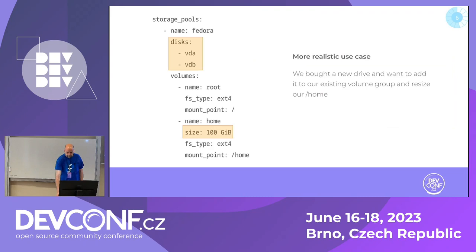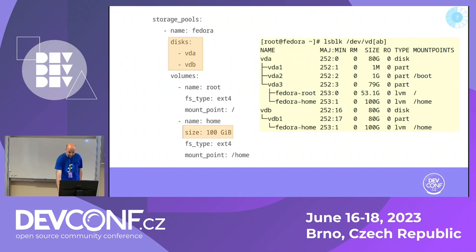Something a little bit more realistic: let's say we have the setup from the previous slide and we bought a new hard drive and want to start using it. We want to add it to our volume group and resize our home partition to have more space for our data. So all you need to do is, under the disks where previously there was only VDA, add your second disk VDB. Then under your home, where it previously was something like 25 gigabytes, you just put 100 gigabytes there and we will resize it for you. After you run that, you will see that VDB is now part of the Fedora volume group and the home logical volume is now 100 gigabytes.